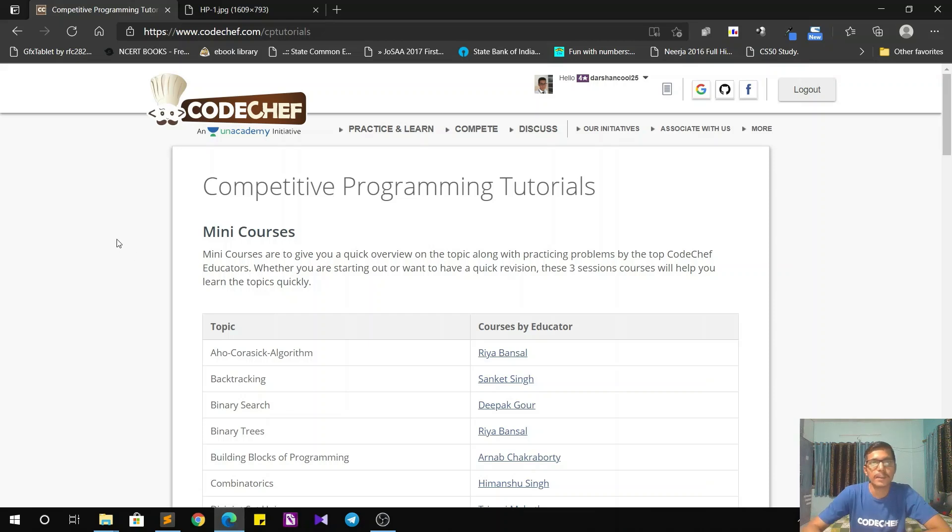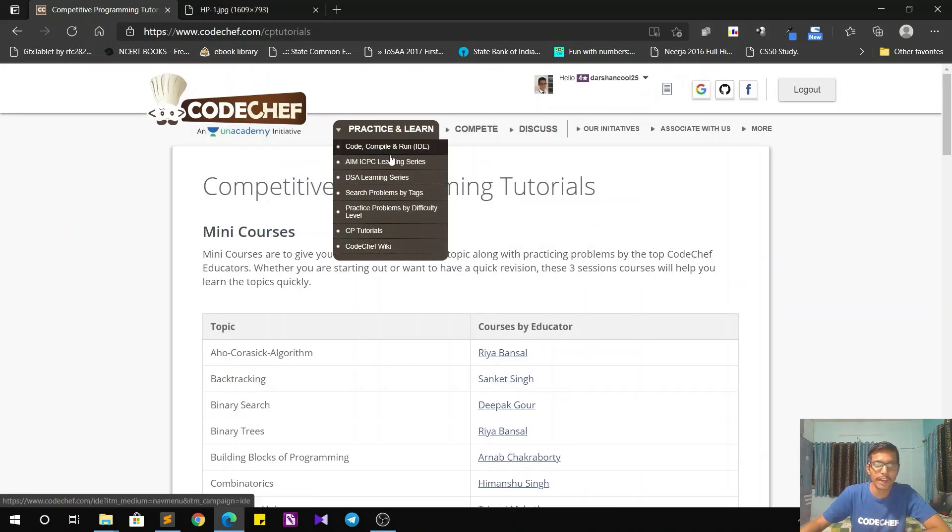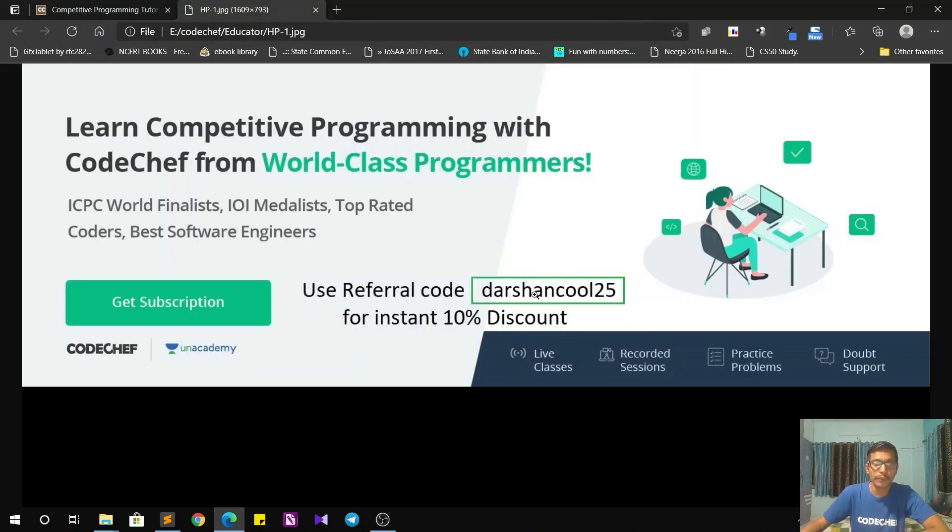Also, I would like to tell you guys about the CP tutorials that we have at CodeChef. If you are starting with programming and are facing difficulty, you can have a look at all these free courses that we have. You can find them over here on the website. These are taken by our educators and they are covering all possible topics in competitive programming. But if you want even more structured content on Unacademy, you can opt for our plus subscription and use my referral code DARSHNKUL25 to avail instant 10% discount while subscribing. Today's video. Bye.